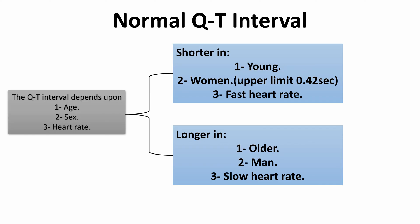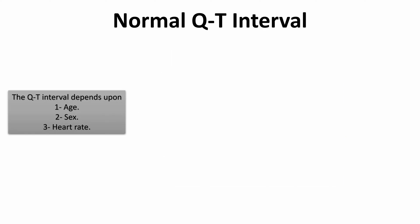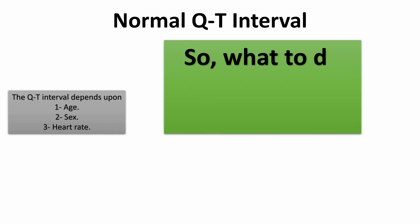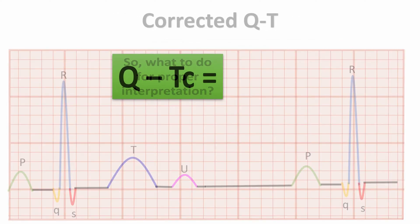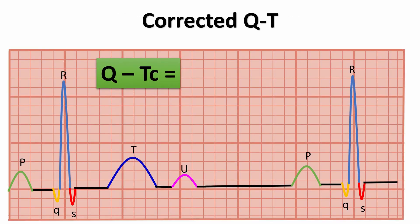So what to do for proper interpretation? We use the corrected QT, or QTc interval. The QT interval must be corrected for heart rate, and this corrected QT interval is known as the QTc interval, determined using a formula.